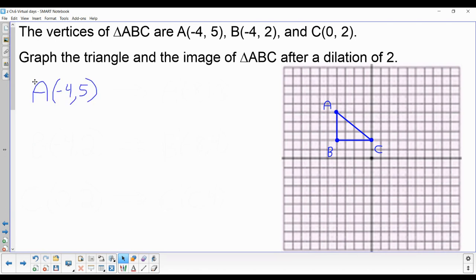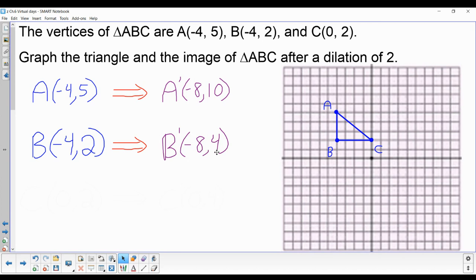So if the original ordered pair for A was (-4, 5), I will get the image by multiplying -4 and multiplying 5 by 2. The image of A becomes (-8, 10), and I just do this for each of the ordered pairs. For point B, which is (-4, 2), I multiply them by the number 2. -4 times 2 is -8, 2 times 2 is 4.